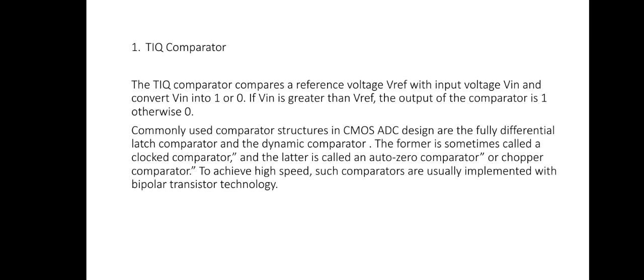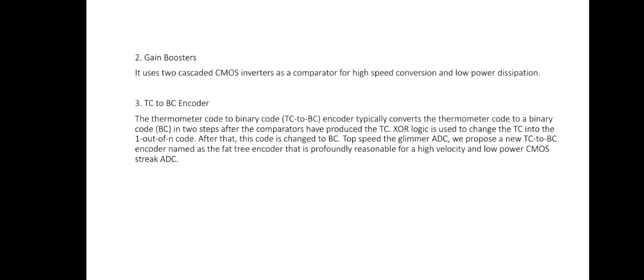To achieve high speed, such comparators are usually implemented with bipolar transistor technology. The second component is the gain booster, which uses two cascaded CMOS inverters as a comparator for high-speed conversion and low power dissipation. The third component is the TC-to-BC encoder, where TC means thermometer code and BC means binary code.